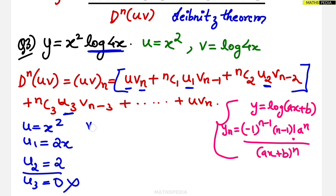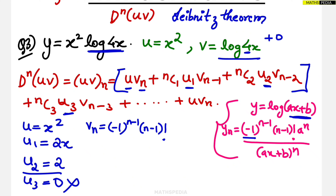So vn for log(4x): here b = 0 and a = 4 (the coefficient of x). Applying the formula: vn = (-1)^(n-1) × (n-1)! × 4^n divided by (4x)^n. There is no need to write '4x + 0'; simply write (4x)^n.